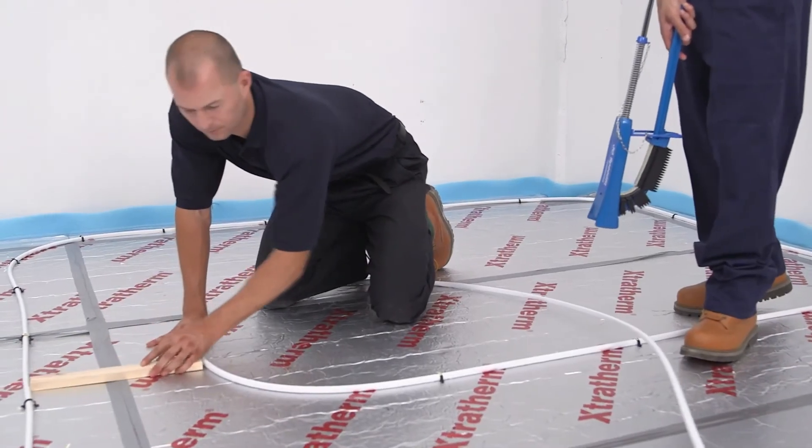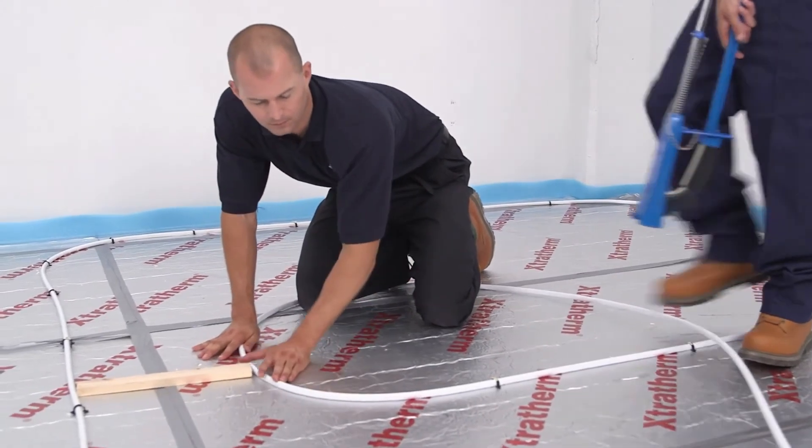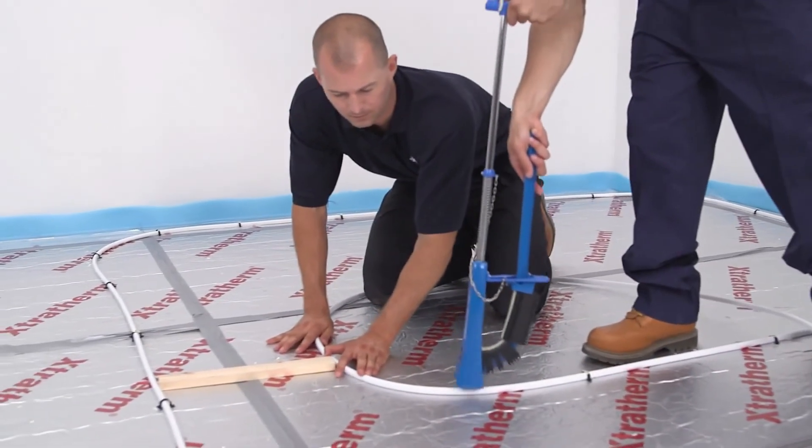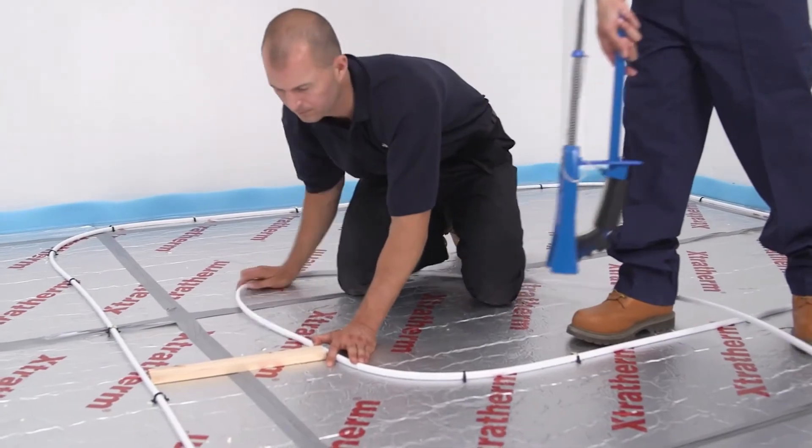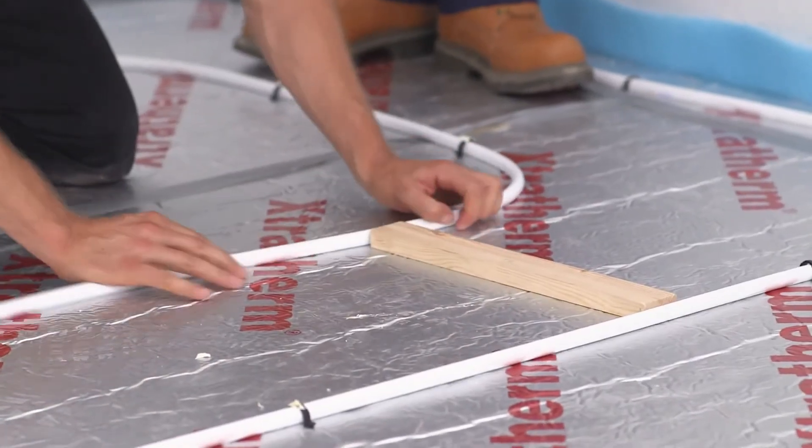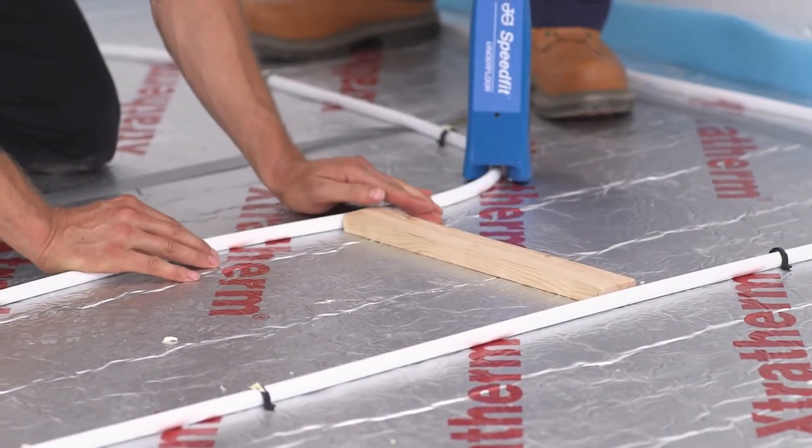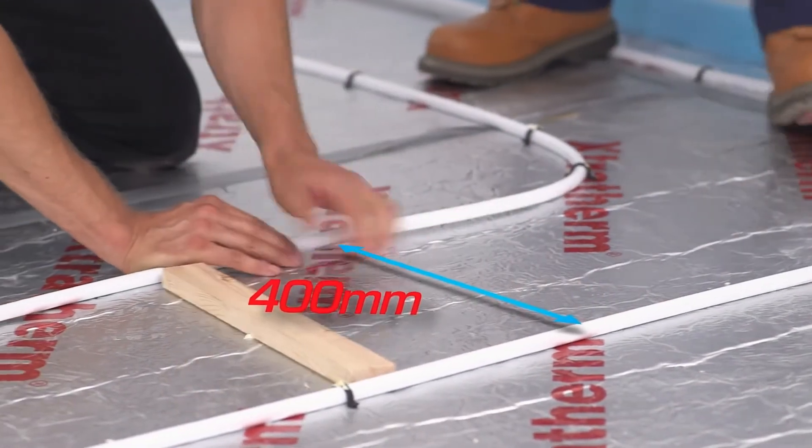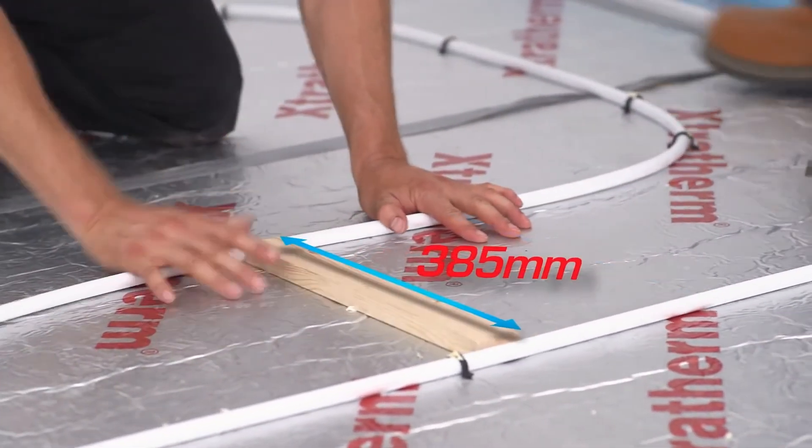Take care to keep the correct distance between pipe centres. The use of a spacer batten placed between the pipes will help here. Because the pipes are 15mm in diameter, subtracting this amount from the centres will give you the length of the spacer to be cut.